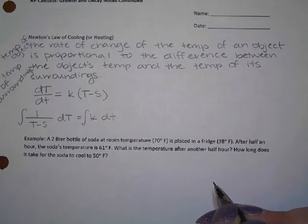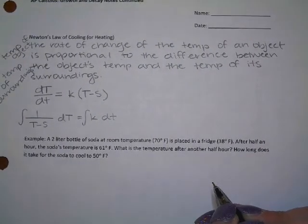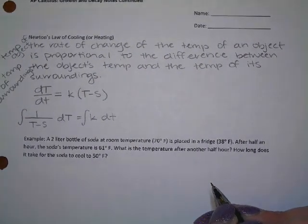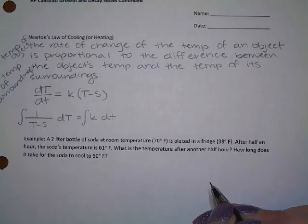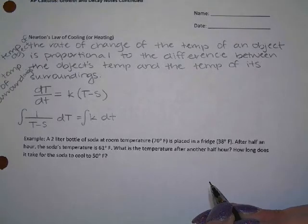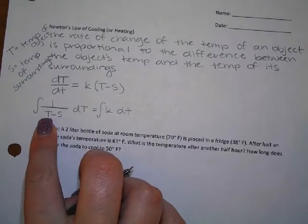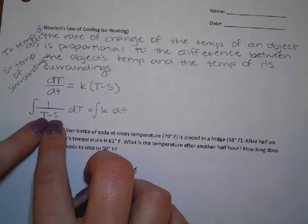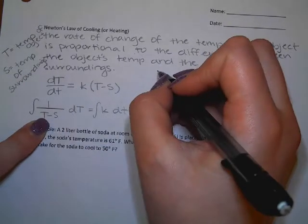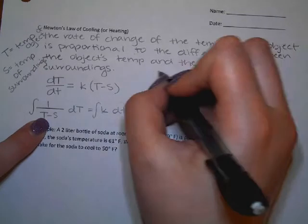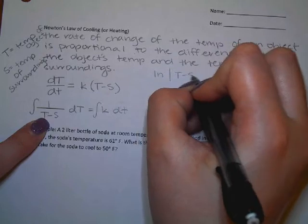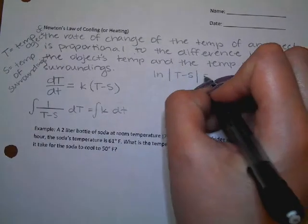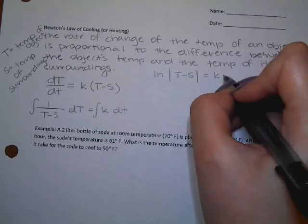This is technically a U-substitution problem on the left, because we have an inside, right? We have a T minus S. But I know that the derivative of T minus S is just going to be 1, because S is not a variable in the problem. It's a constant. The surroundings are a constant temperature. So when I integrate the left side, I get ln|T minus S| equals kt plus C. And we're making sure to put that absolute value sign.